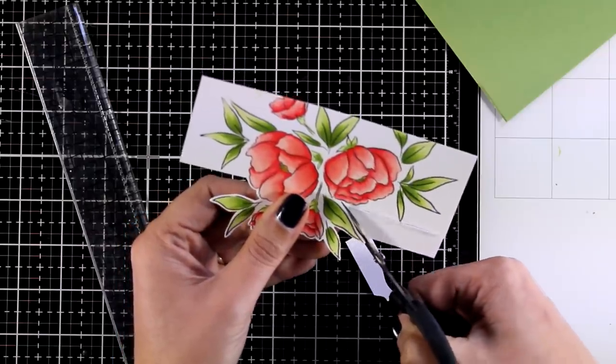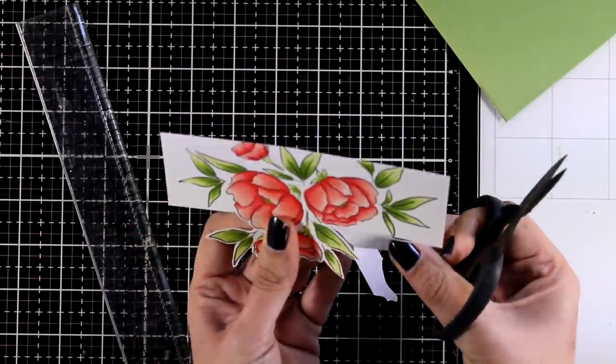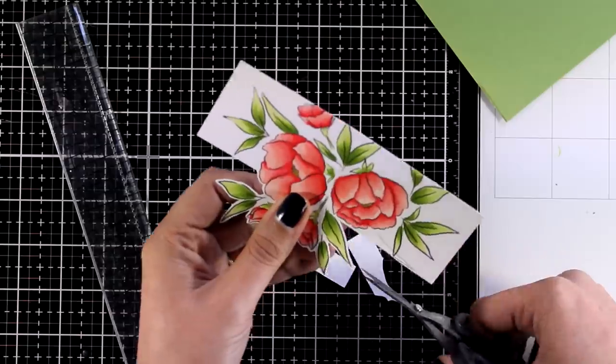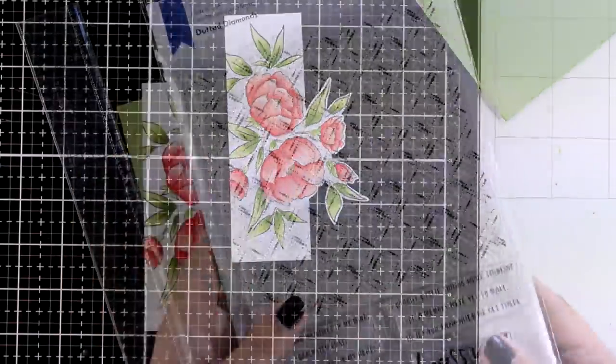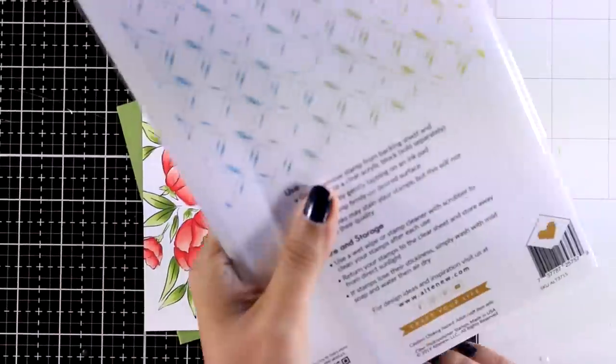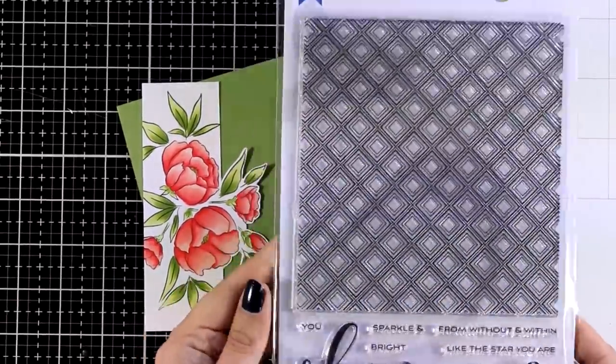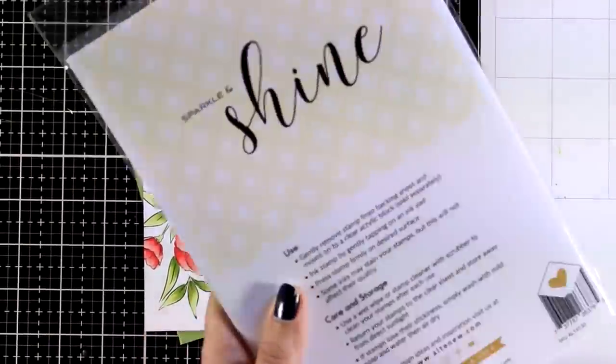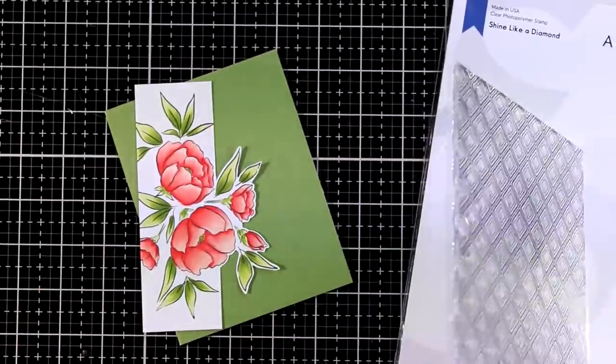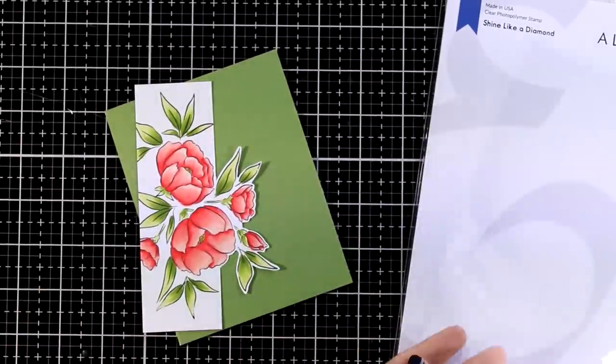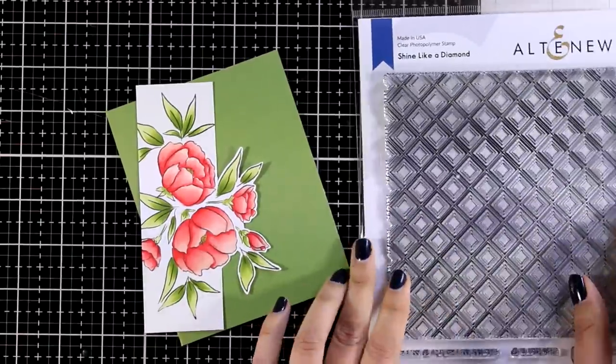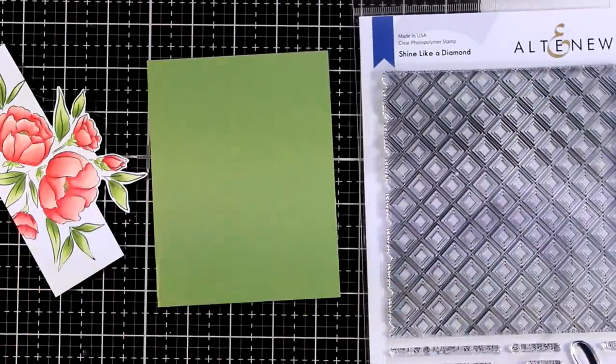Also notice that to match this border with a beautiful design, I picked a green cardstock that's four and a quarter by five and a half. I tried to match the color of the green with the color of the leaves. So now to decorate it even more I'm going to use this new stamp set. This is called Shine Like a Diamond and it has this big, I believe it's six by six, big design of diamonds which I'm going to stamp on top of this green cardstock.